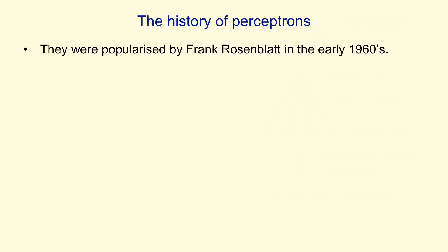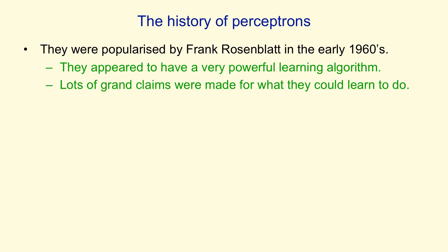Perceptrons have an interesting history. They were popularized in the early 1960s by Frank Rosenblatt. He wrote a great big book called Principles of Neurodynamics, in which he described many different kinds of perceptrons. And that book was full of ideas. The most important thing in the book was a very powerful learning algorithm, or something that appeared to be a very powerful learning algorithm. A lot of grand claims were made for what perceptrons could do using this learning algorithm.